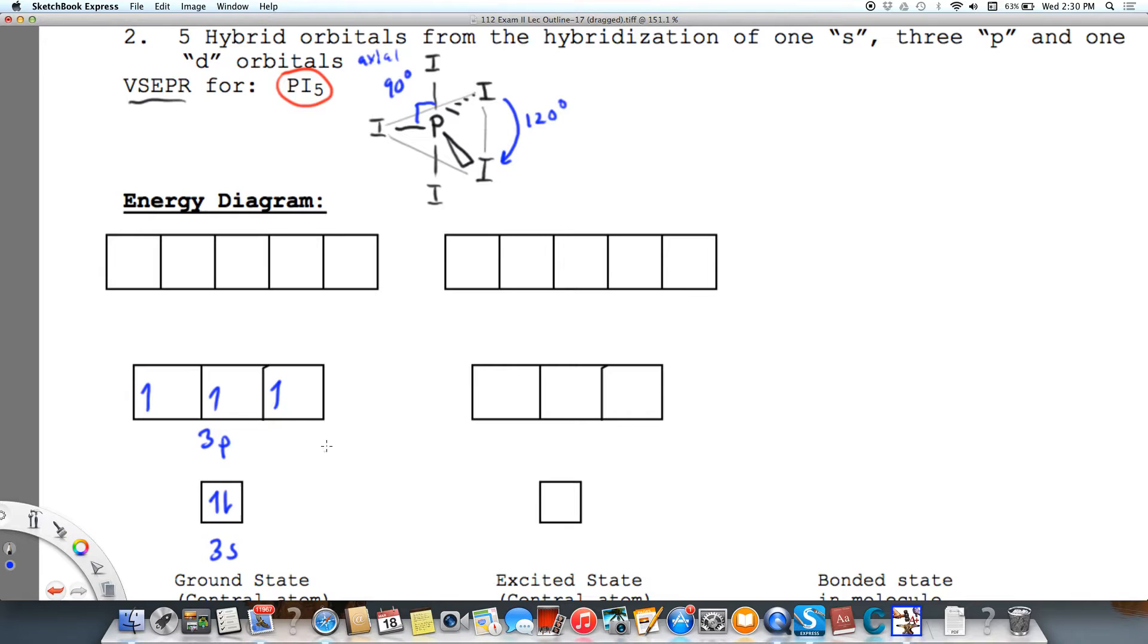Well, in order for us to get five bonds with iodine, in order to have that sharing, we cannot use this configuration. So what's going to happen is one of these s electrons, this one right here, is going to get promoted up to the 3d. So the 3d is there, it's available, it's just empty. But we're going to promote one electron from phosphorus up to the 3d.